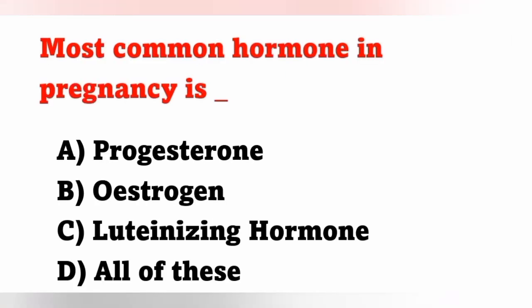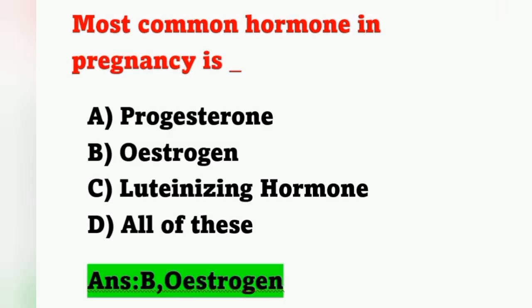The next question: the most common hormone in pregnancy. Options — A: progesterone, B: estrogen, C: luteinizing hormone, D: all of these. The hormone most commonly involved in pregnancy is estrogen — option B is the correct answer.